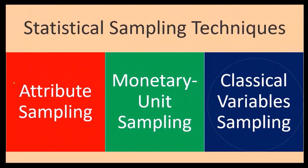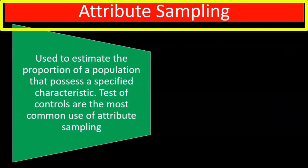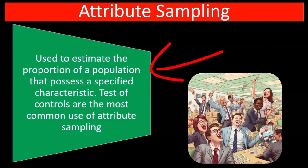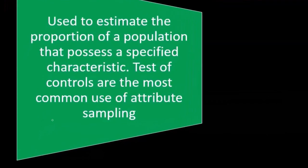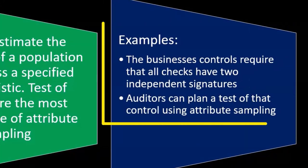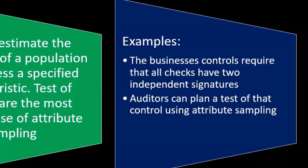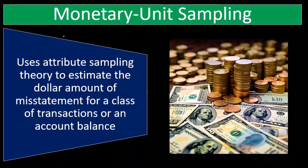For statistical sampling techniques, we have attribute sampling, monetary unit sampling, and classical variables sampling. Starting with attribute sampling: it is used to estimate the proportion of a population that possesses a specified characteristic. Tests of controls are the most common use. For example, if a business's controls require that all checks have two independent signatures, auditors can use attribute sampling to test whether that control is in place.